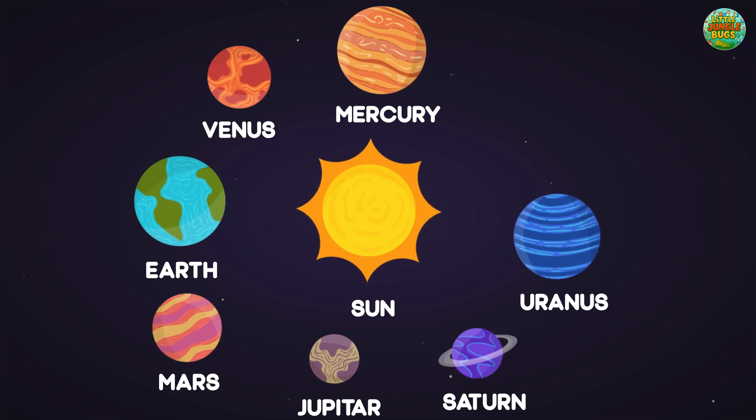Uranus. Uranus is light blue and spins on its side. It's made of gas and is one of the coldest planets in the solar system.